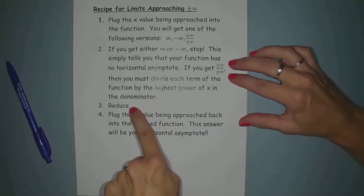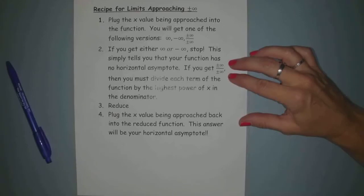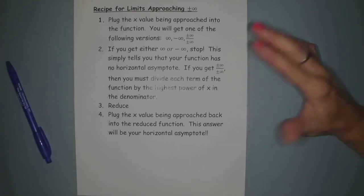Once you do that, you know to reduce. And finally, plug the x value being approached back into the reduced function. This answer will be your horizontal asymptote or the y value being approached. So that's your recipe. Feel free to pause.